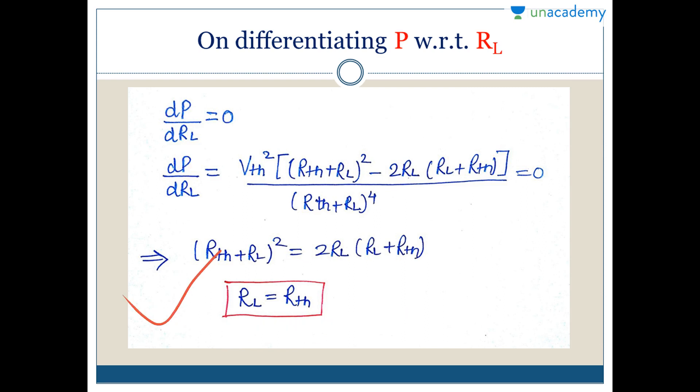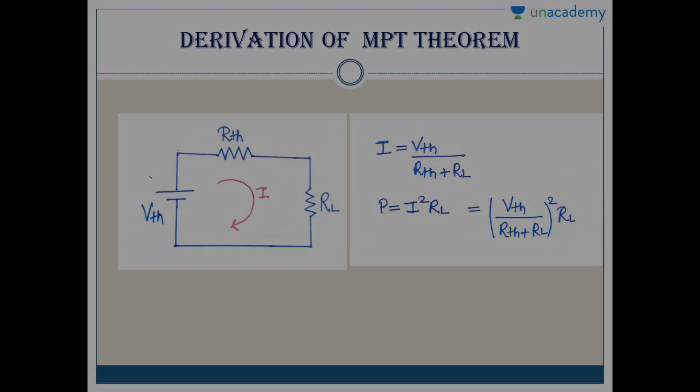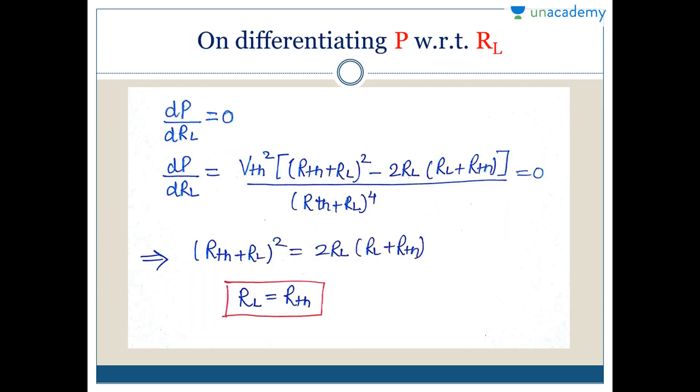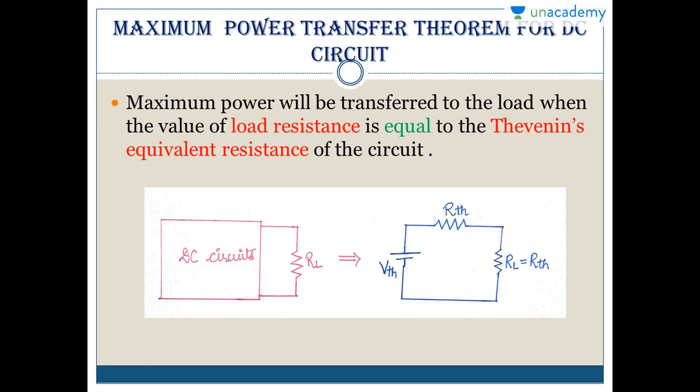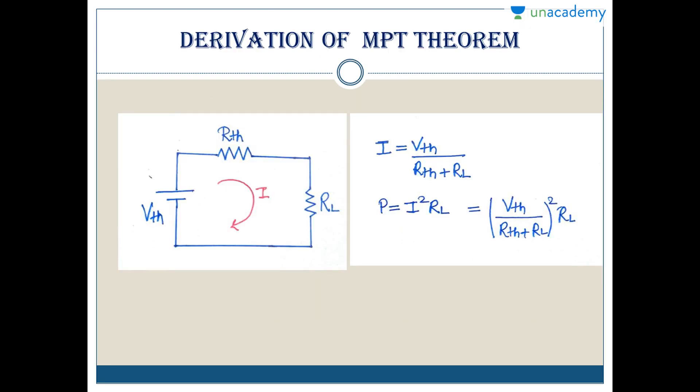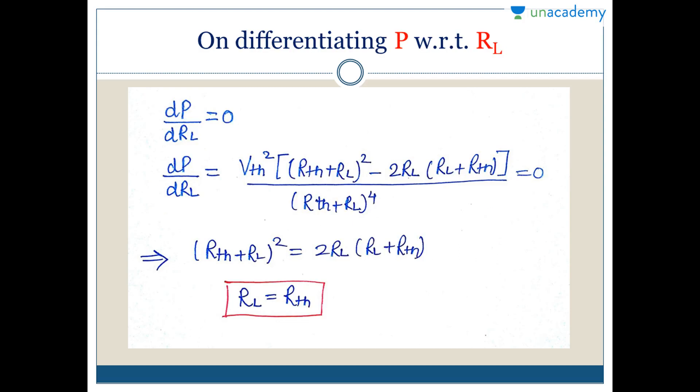On solving, you get RL equals RTH. With RTH, you will be able to find the maximum power transfer. At the end we will find out the power. Let's see the solution for finding RTH. You know how to find RTH.